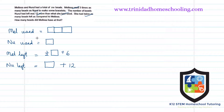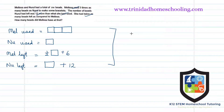We haven't used the 106 yet. The question asks how many beads did Melissa have at first. If they had a total of 106 beads altogether, that means the 106 is everything they used plus everything that was left.